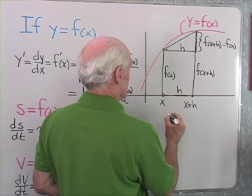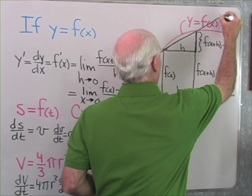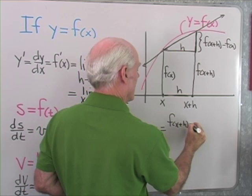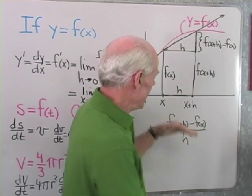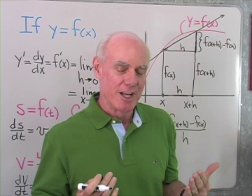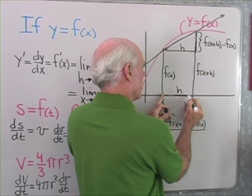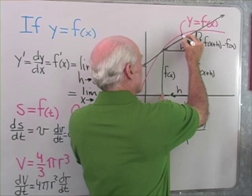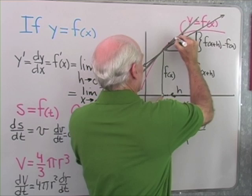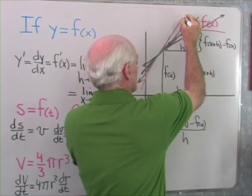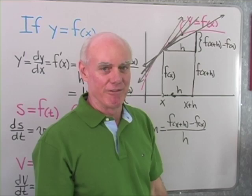The slope m of this line is f of x plus h minus f of x, all divided by h. So what do I mean when I say I take the limit as h goes to 0 of that quantity? I want to find the limit as h goes to 0 — that's the same as taking this point and sliding it towards this point, the whole time keeping track of the slope of this line. As h gets smaller and smaller, until finally h goes to 0 in the limit, I have the slope of the line tangent to the graph of y equals f of x at that point x.